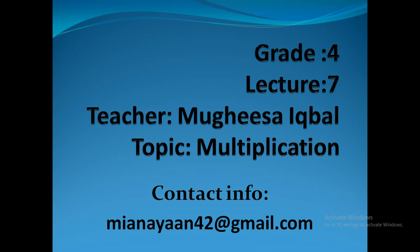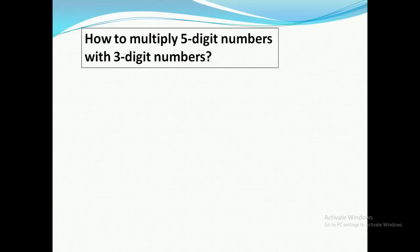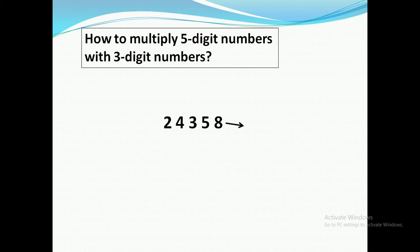Students, now we will be having five digit numbers in the multiplicand and three digit numbers in the multiplier. You are having an example in front of you with five digits in the multiplicand and three digits in the multiplier, and we have to multiply these values together.